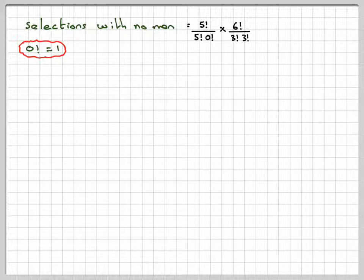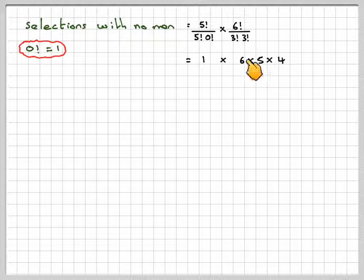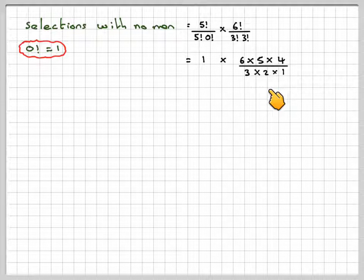So we know that 0 factorial by definition is 1. So we're going to have 5 factorial divided by 5 factorial, which is 1. And here on the top, you're going to have 6 times 5 times 4. In the denominator, we're going to have 3 times 2 times 1. The 3 and the 6 will cancel, and the 2 and the 4 will cancel. So we're going to have 2 times 5 times 2. So there are 20 selections with no men.